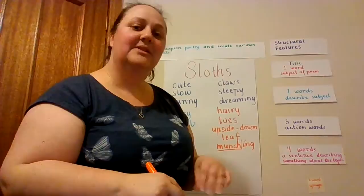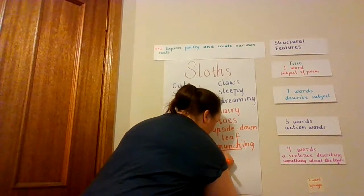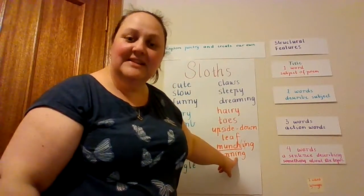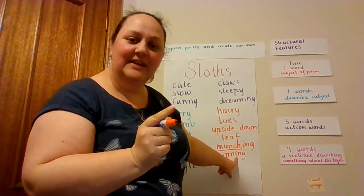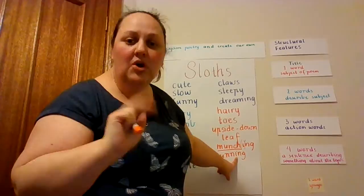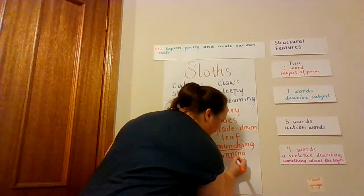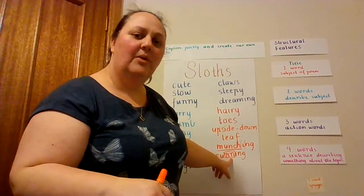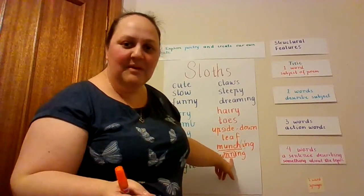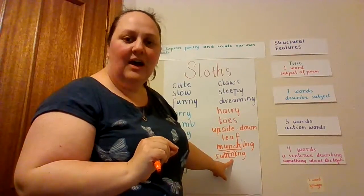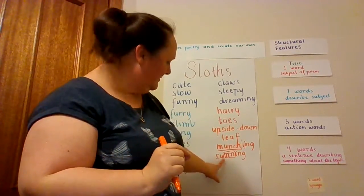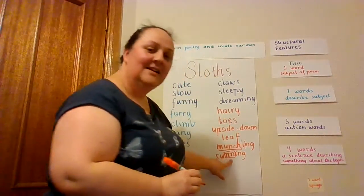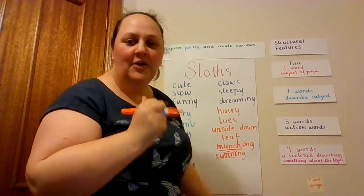Something that sloths really love to do is sun themselves, so I'm going to write the word 'sunning.' You can see that I've used that suffix '-ing' again, added to the end. But I'd like to draw your attention to the double consonant in the middle of that word. My base word is 'sun' and I wanted to write 'sunning.' I'm sure you can remember — when adding '-ing' to a word that has a short vowel sound, we need to double the consonant. That short vowel sound is 'u' — sunning. So we need to have a double consonant before we add the suffix. Well done, guys.